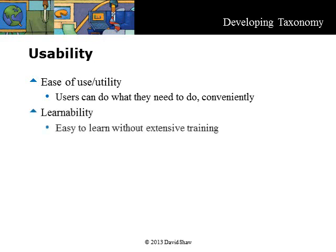Learnability is a measure of how easy a taxonomy is to learn without extensive training. Users should be able to understand the taxonomy easily. Memorability is a measure of how quickly a user can recall the way to navigate and use a taxonomy. It is important that your taxonomy is memorable, so that a user who has not used it in months is able to quickly recall how to find a document. A memorable taxonomy will lead to more satisfied users.